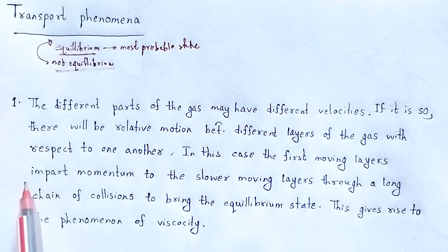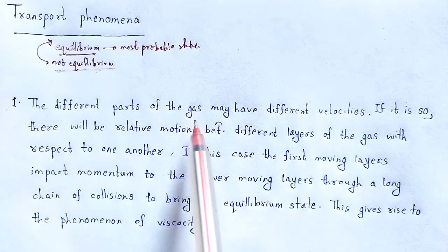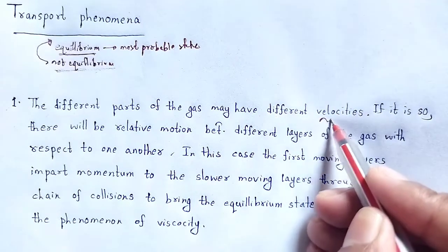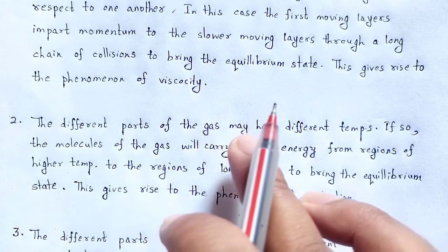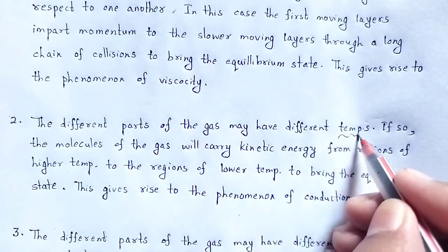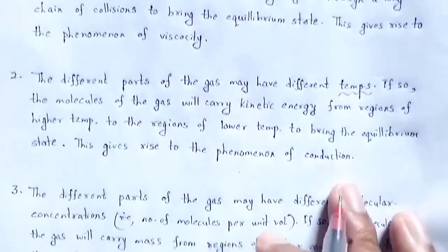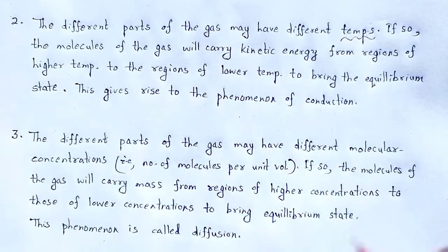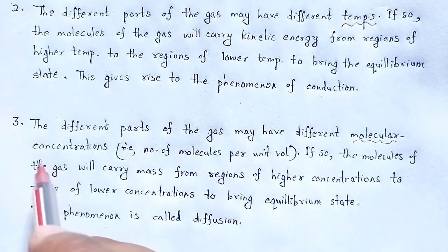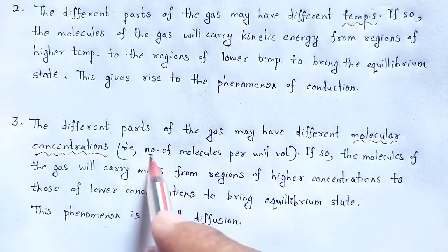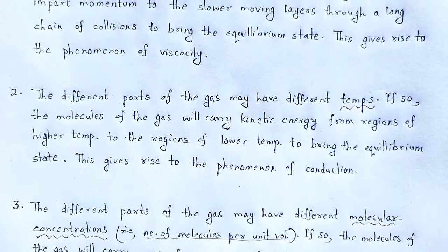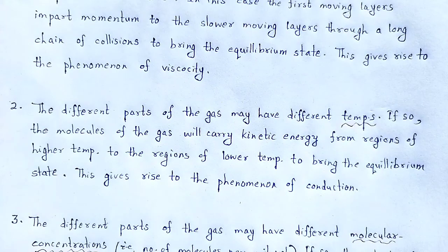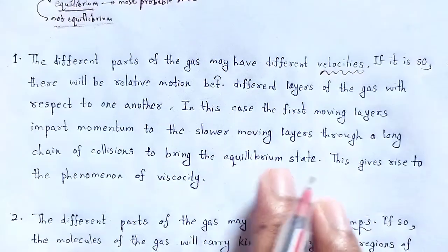First, the different parts of the gas may have different velocities — that is based upon the velocity concept. Second, the different parts of the gas may have different temperatures. Third, the different parts of the gas may have different molecular concentrations. Molecular concentration means the number of molecules per unit volume. We have to discuss one by one how the gaseous states which are not in equilibrium convert to equilibrium state.